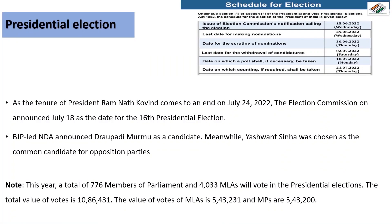The topic is the Presidential Election. Ram Nath Kovind's term ends in July 2022. The Election Commission of India announced the date of the presidential election. The BJP-led NDA selected their candidate, while the opposition parties selected Yashwanth Sinha as their candidate.